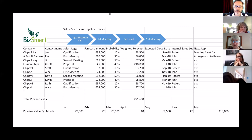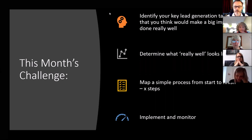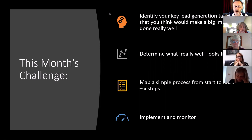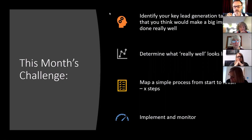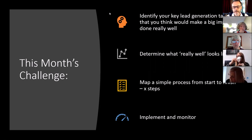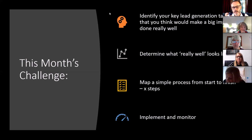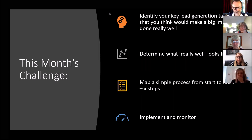This may sound like a lot — some of us will already be doing many of these things; for others it's a big step. The challenge for all of us is to identify one key lead generation tactic — either something you're not doing or something you could do better — that if done really well would make a big impact. Pick that, determine what really good looks like, and map out a simple process with steps, measures for output at each step, and a clear reason for doing each step. Then implement it and monitor.